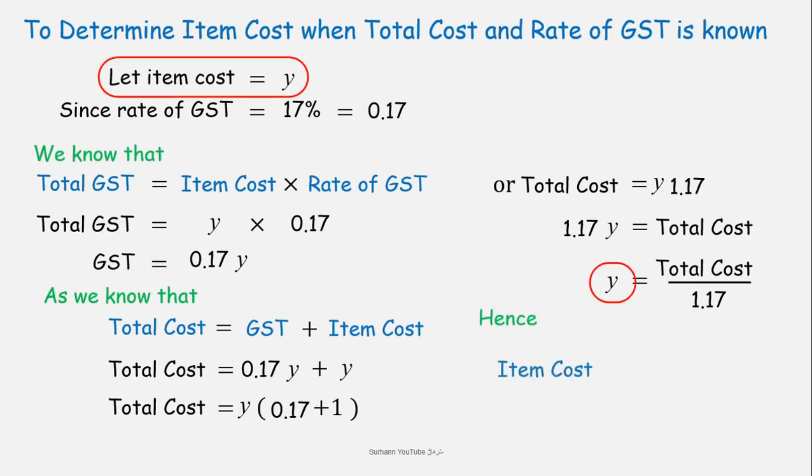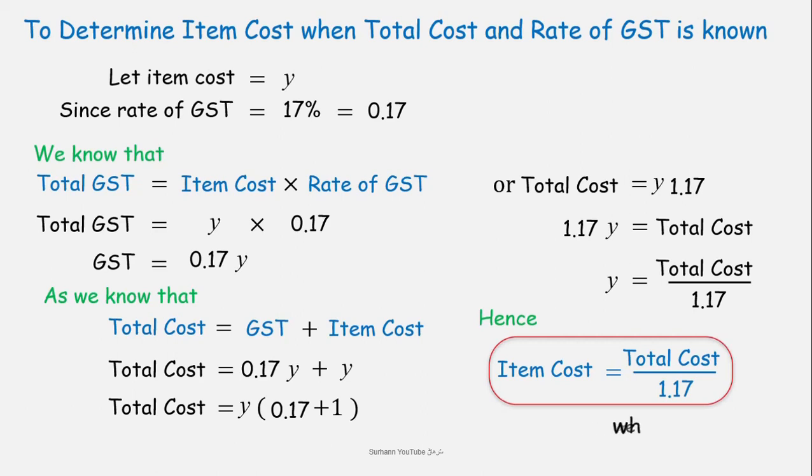Hence Y is the item cost. So the formula for item cost will be equal to total cost divided by 1.17, where rate of GST is 17%.